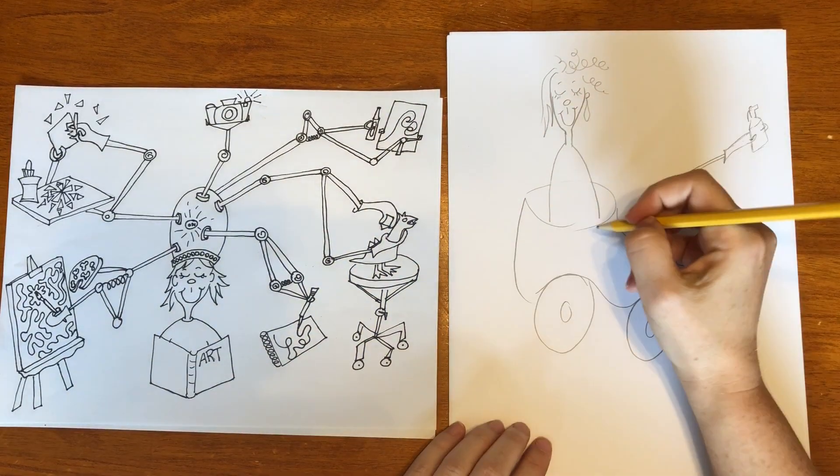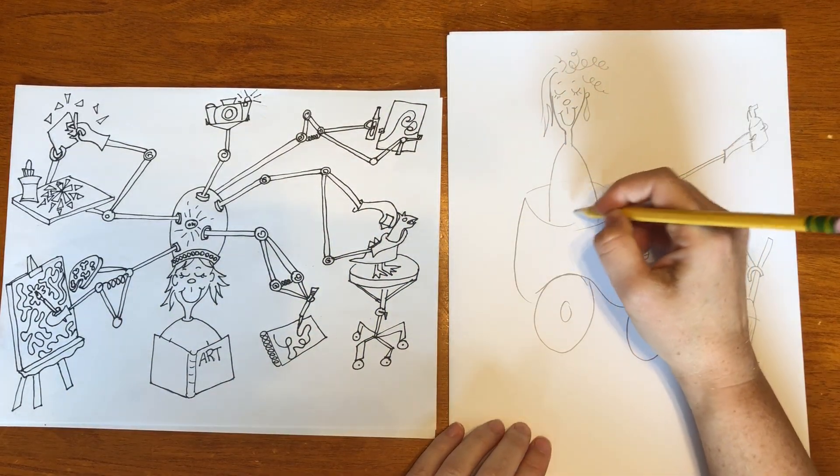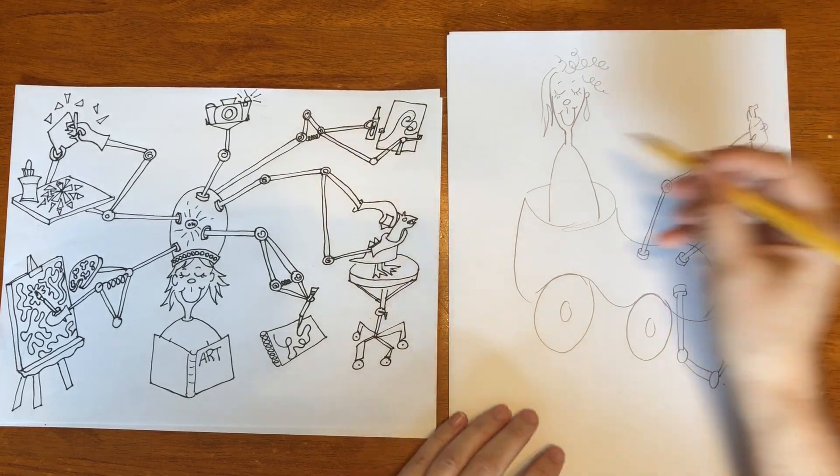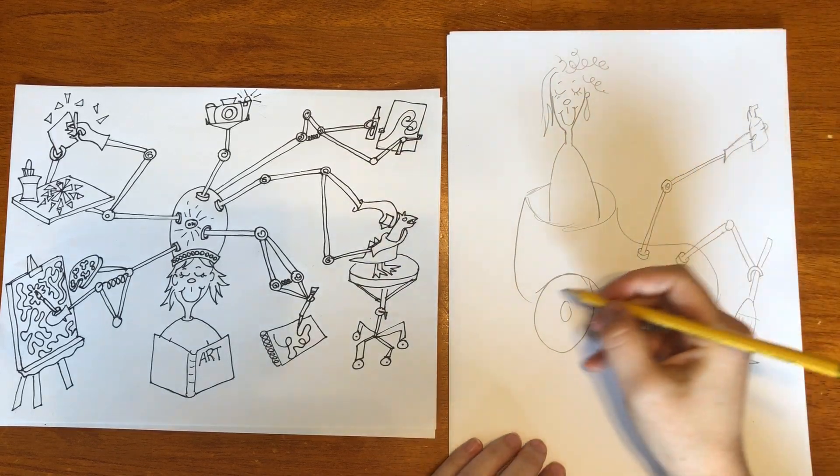This right here would be erased. So the person looks solid. You can draw hands if you want. Or the hands can be inside controlling. However you want.